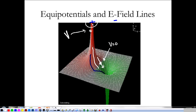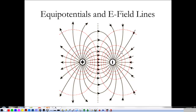A more realistic picture we can draw is this: the dotted lines here are equipotentials and the solid lines are the electric field. Looking at this, voltage is zero here, then plus 10, plus 20, plus 30, and plus 40 toward the positive charge. Over near the other charge, we'd have negative 10, negative 20, negative 30, and negative 40 — because we get negative voltage from negative charge and positive voltage from positive charge.